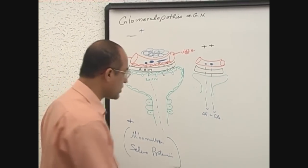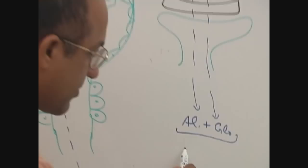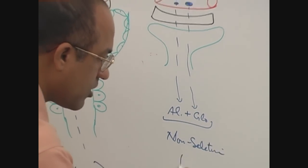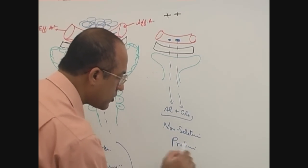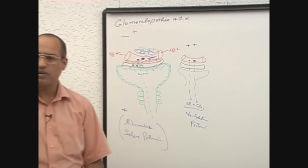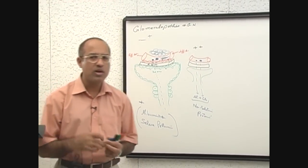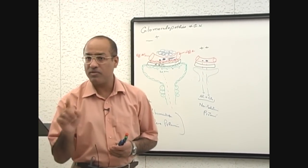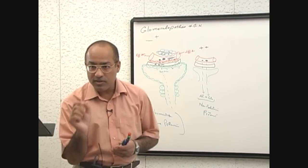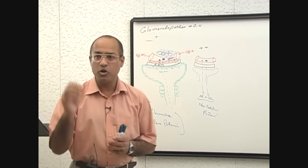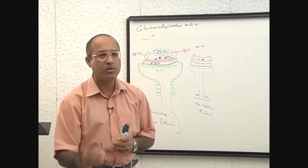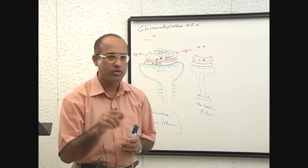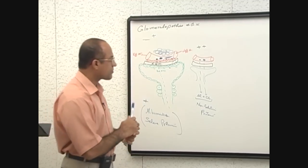This type of proteinuria is called non-selective proteinuria. To repeat: with plus 1 injury, only albumin is allowed to leak but globulin will not leak. But if the injury is slightly more than that, then not only albumin will leak but globulin will also leak, and we say there is non-selective proteinuria.